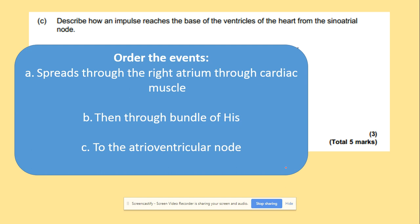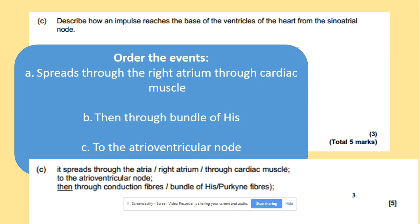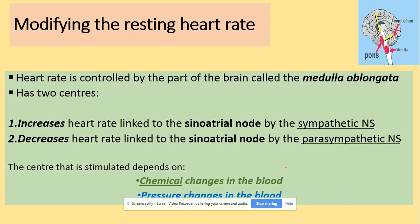To describe how an impulse reaches the base of the ventricles from the sinoatrial node, you need to order the events: it spreads through the atria from right to left atrium, then through the atrioventricular node, then to the bundle of His. We can modify the resting heart rate — the part of the brain involved is the medulla oblongata. We can increase or decrease the heart rate using the sympathetic or parasympathetic system, and the decision depends on chemical and pressure changes in the blood.